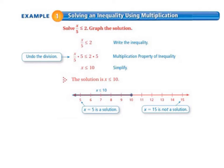So first step is to write the inequality. We're going to use the multiplication property of inequality and that undoes the division. So we need to multiply both sides by 5 in order to get x by itself.